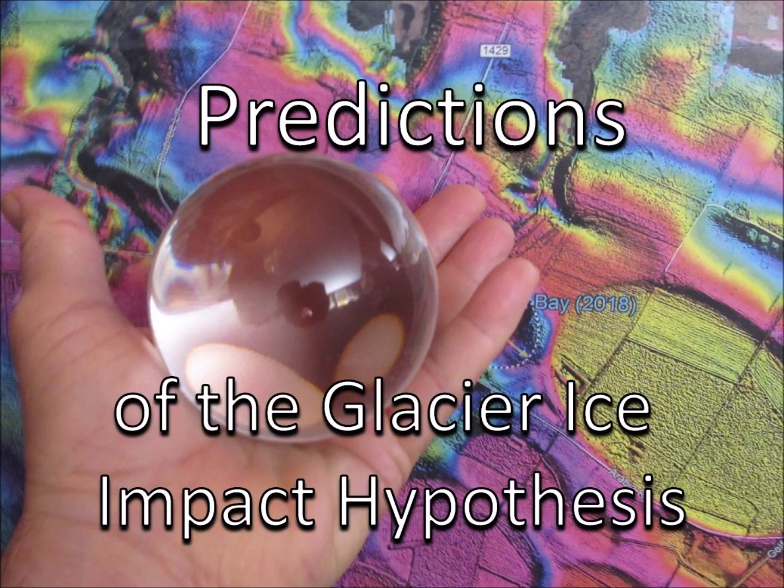Predictions of the Glacier Ice Impact Hypothesis. Scientific predictions are not made with a crystal ball — they are derived from the mathematical and logical consequences of a hypothesis.